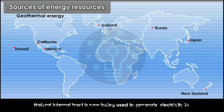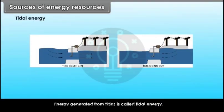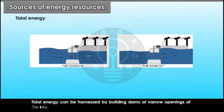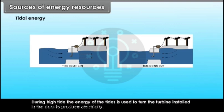Tidal energy: Energy generated from tides is called tidal energy. It can be harnessed by building dams at narrow openings of the sea. During high tide, the energy of the tides is used to turn turbines installed in the dam to produce electricity.